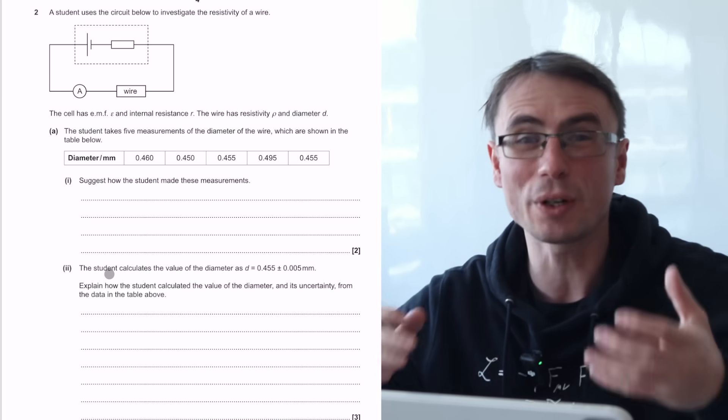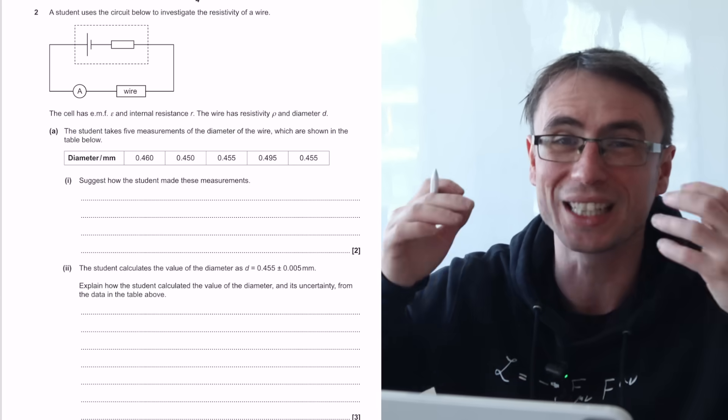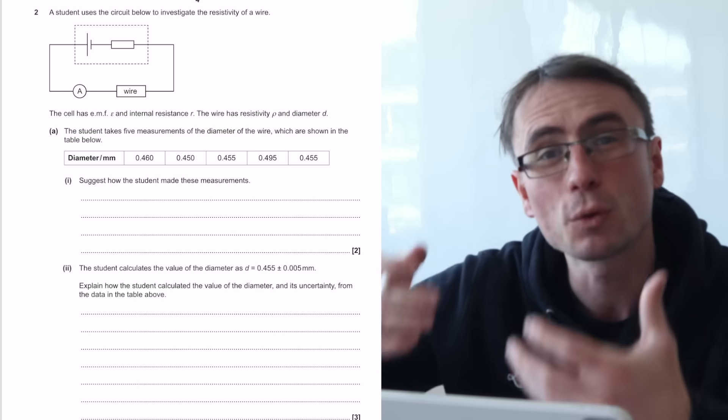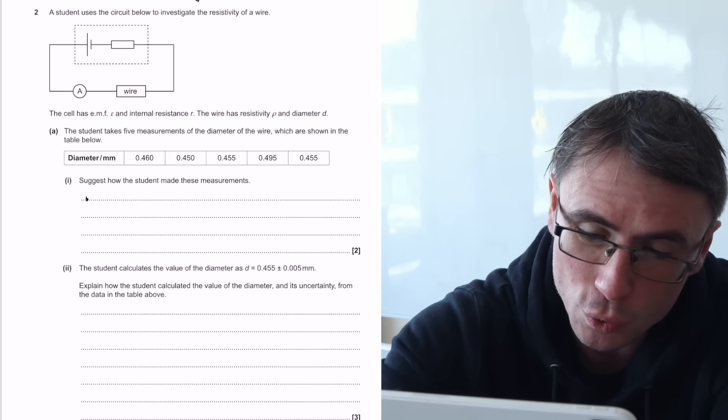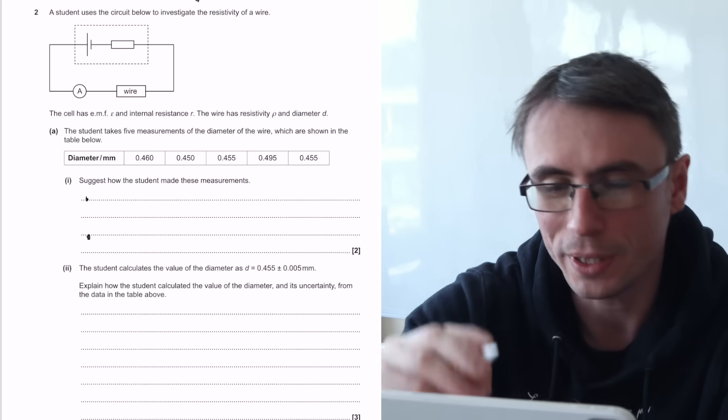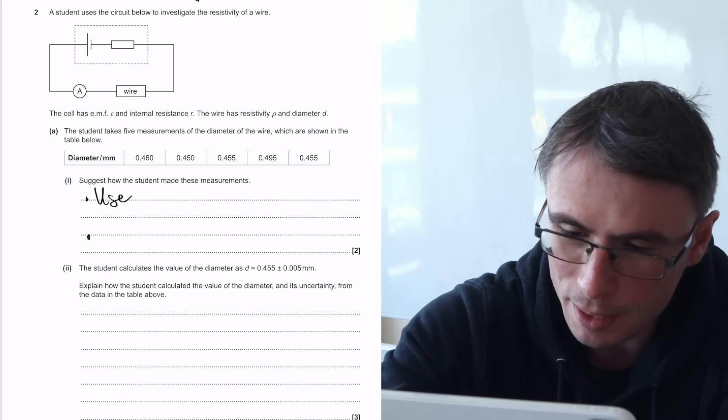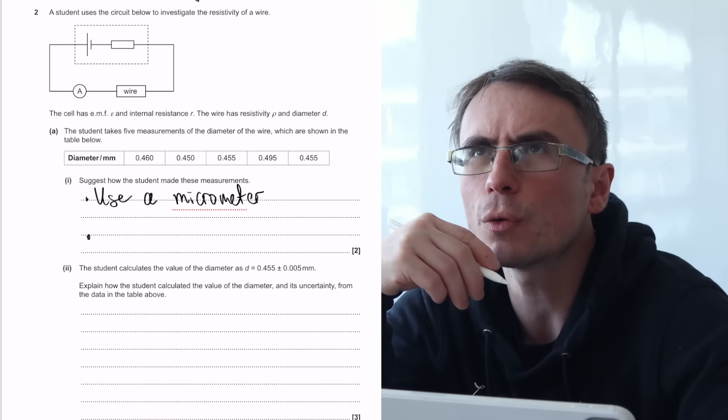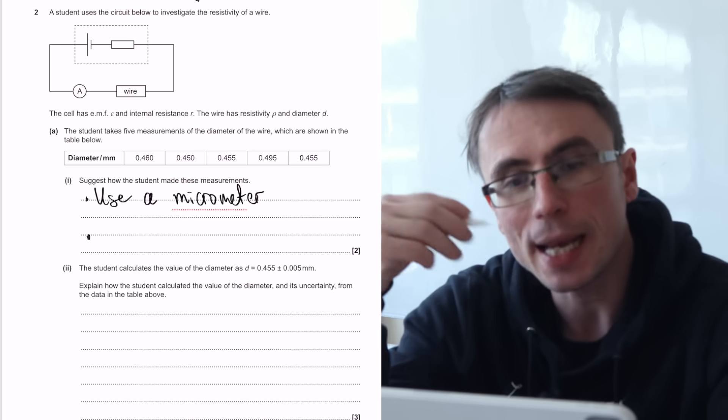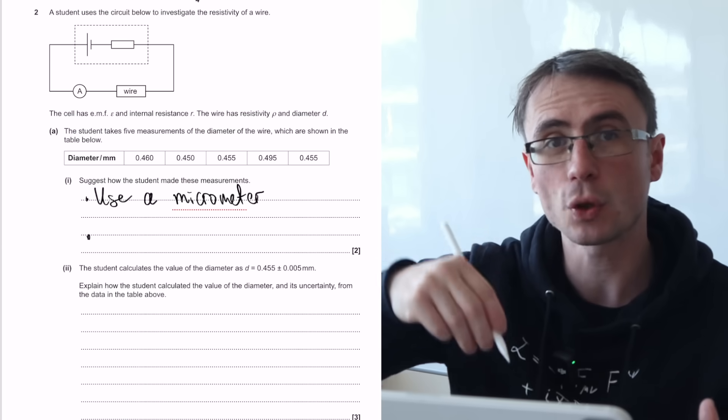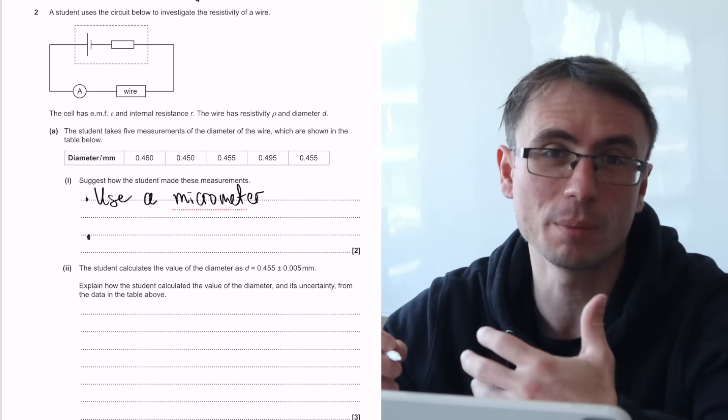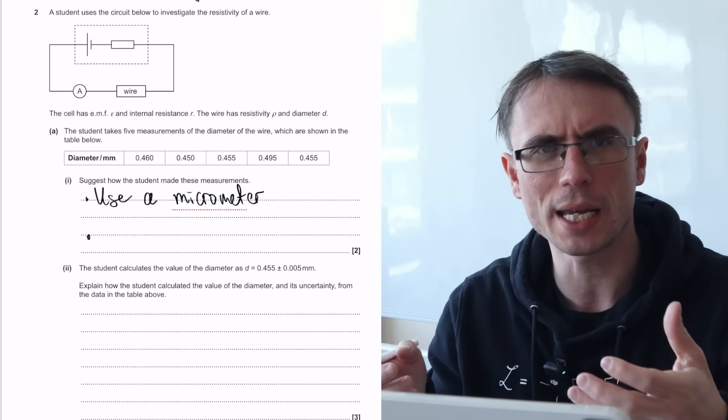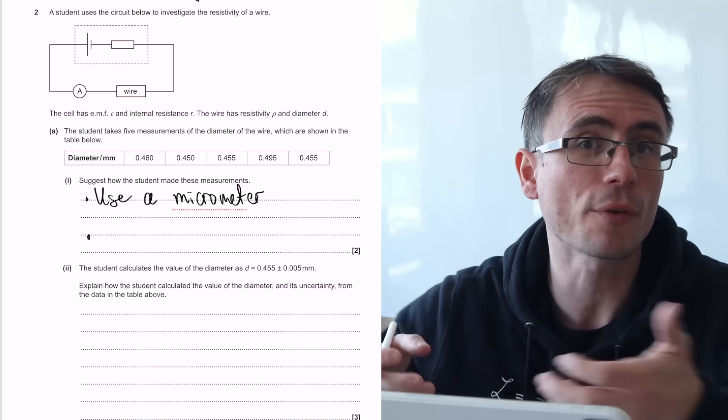Check out the resolution of these readings. The only way that we can achieve that is via a micrometer or a vernier caliper. Since this is a two marker, I'm going to bullet point two separate points. Point number one, use a micrometer. Depending on what we're measuring, we can say that we're going to measure the diameter at different points along the wire and then find the mean. If this was a sphere, we can say that we're going to measure it in different directions.